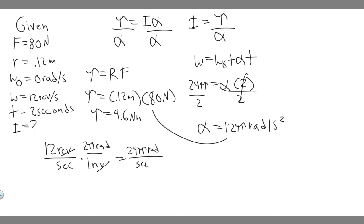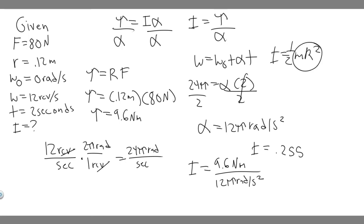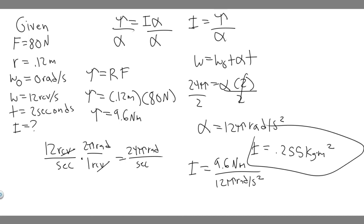Now we have both torque and alpha, so we can solve for the moment of inertia. I equals torque over alpha, which is 9.6 newton-meters divided by 12 pi radians per second squared. Calculating that gives approximately 0.255. The units for moment of inertia are kilogram meters squared, so the moment of inertia of the wheel is 0.255 kilogram meters squared. That's your answer — hopefully you found this useful!